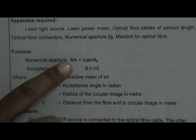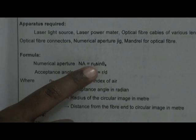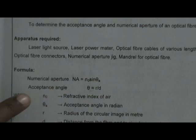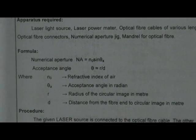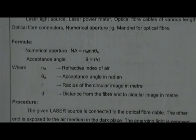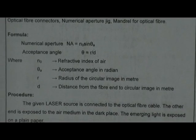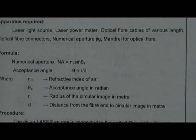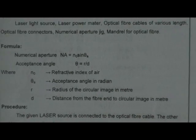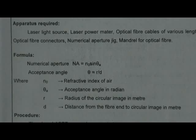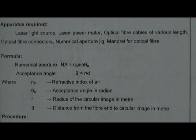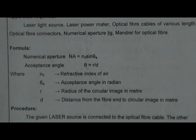Numerical aperture NA is equal to n0 sine theta A. Acceptance angle theta is equal to r divided by d, where n0 is the refractive index of air, theta A is the acceptance angle in radians, r is the radius of the circular image in meters, and d is the distance from the fiber end to the circular image in meters.